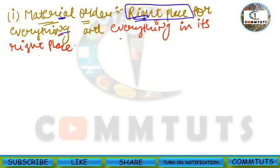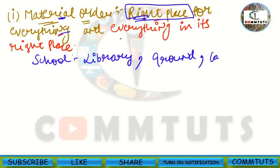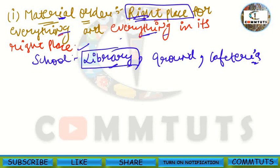For example, in your school there is a library for keeping books, a ground for playing, and a cafeteria for eating and drinking. So this is what we call 'right place for everything' — every item has a designated right place. But having a right place for everything is not sufficient on its own; everything should also be in its right place.